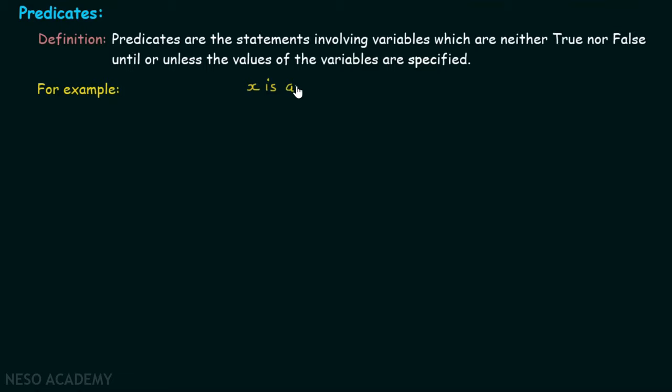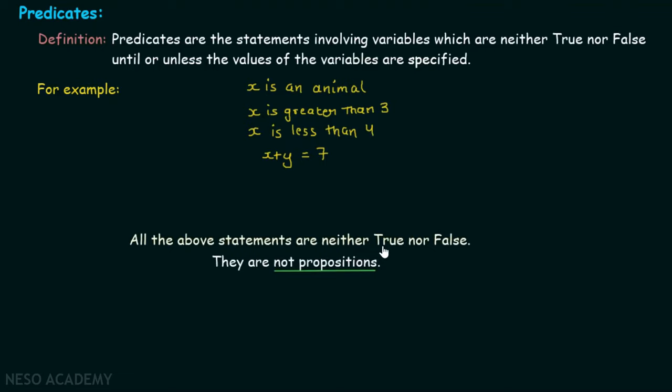Let's say that x is an animal. This statement involves a variable, that is why we cannot identify the truth of this statement until or unless we give a value to this variable. Or we could have something like: x is greater than three, x is less than four, or x plus y is equal to seven. All the above statements are neither true nor false — they are not propositions, because we cannot identify the truth value of these statements. They are simply statements.